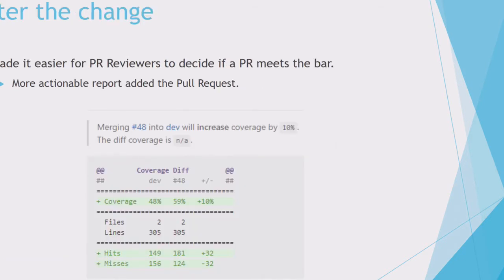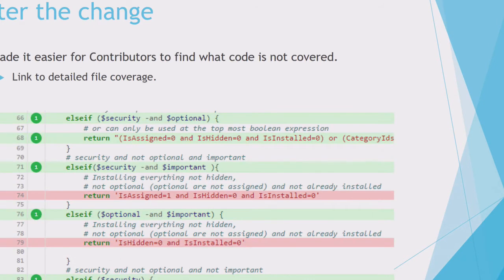This is what we get in a pull request — I'll show an actual pull request later. It shows that a given pull request got plus 10% code coverage, so we would probably take it. This report is much more actionable. If you go and look at a build in the viewer, you can see that individual lines are hit, with numbers in the little green circles indicating how many times a line was hit.